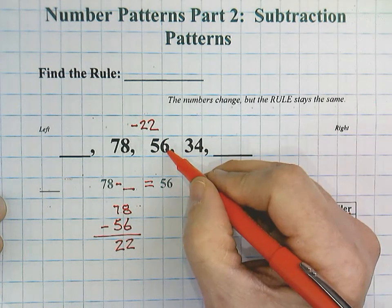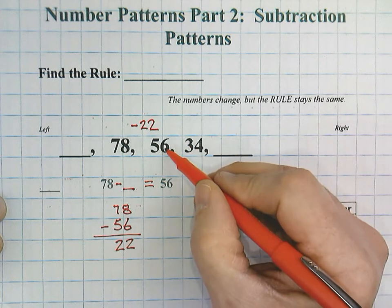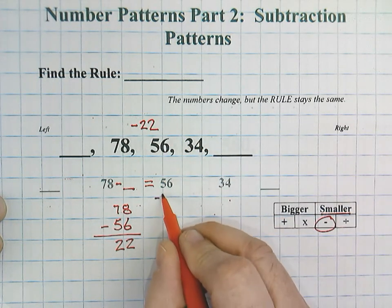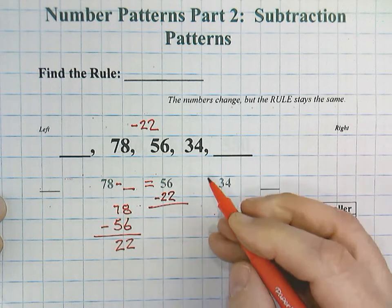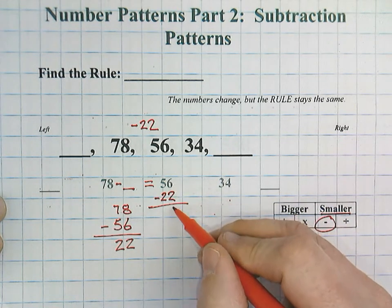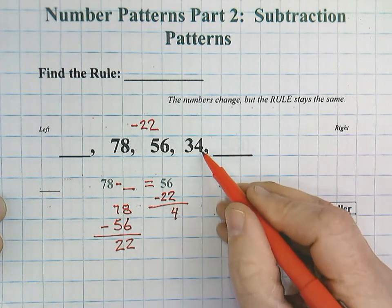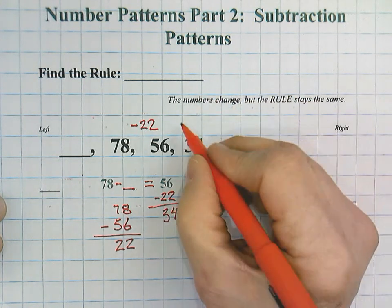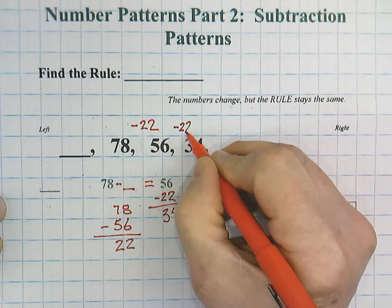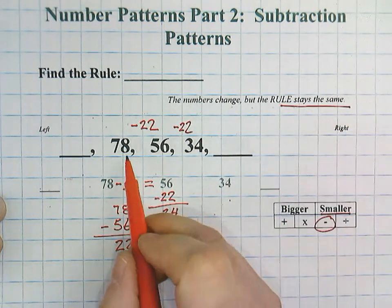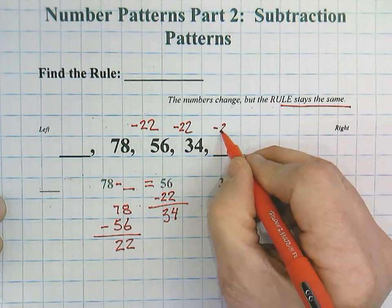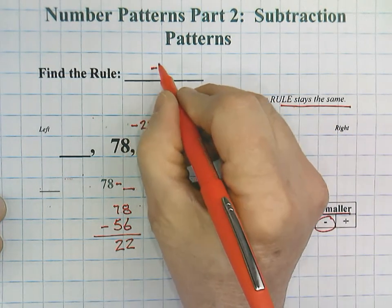Well, it has to be the same. So, let's check it out for 56 to 34. So, 56, I'll show that down here. Keep it simple. Minus 22. 6 minus 2 is 4. So, that checks out. And 5 minus 2 is 3. And you can see that we have our 34. Remember that the rule stays the same. Our numbers are changing, but the rule stays the same. So, I'm going to write our rule in up here.